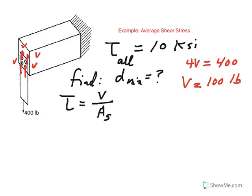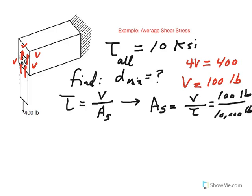So now if you rearrange this equation and solve for the area, the area is going to be V divided by tau allowable. So if you take V which is 100 pounds and you divide by tau which is given as 10,000 psi, now remember psi is pounds per inch squared, so pound and pound get cancelled.